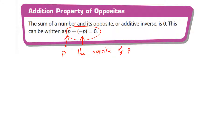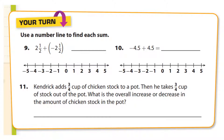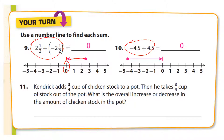We use parentheses to separate the operation from the sign: p plus negative p equals zero. On the number line: start at two and a half, move left two and a half — stop at zero. Similarly, start at negative 4.5, move right 4.5 — arrive at zero.